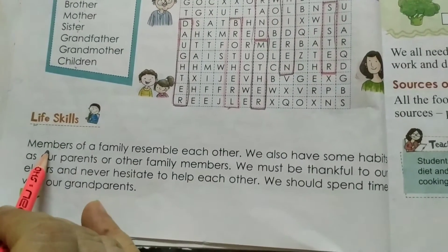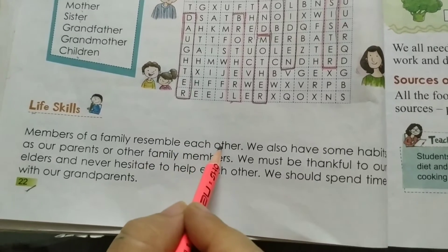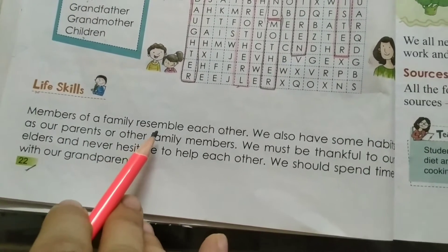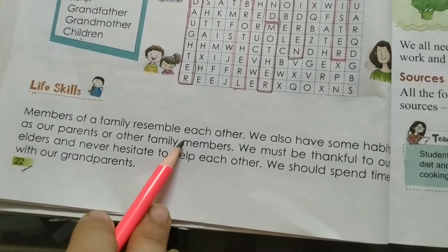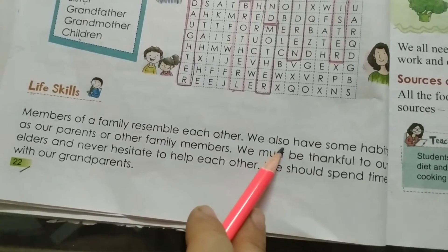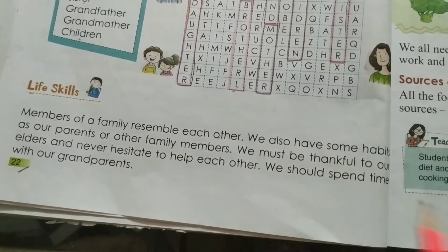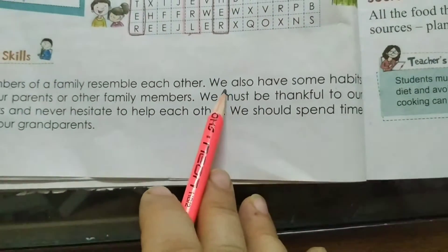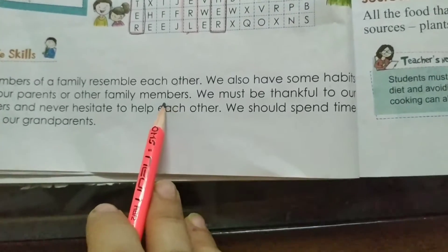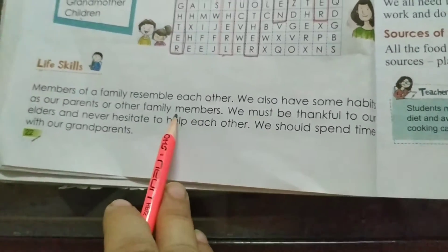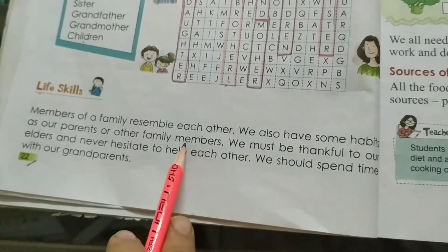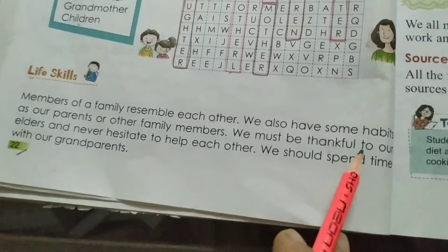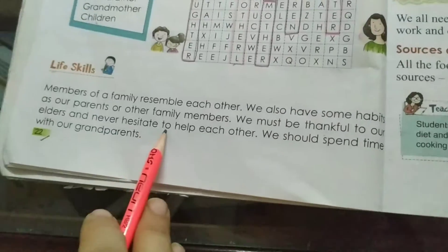Life skills — members of a family resemble each other. Members of family — आप family में जितने भी members होते हैं, वो सब एक दूसरे से जुड़े होते हैं। We also have some habits as our parents or other family members. हमारे जो माता पिता हैं या परिवार के अन्य सदस्यों के रूप में हमारी कुछ आदतें हैं — हमारे parents से हमारी कुछ habits उनसे मिलती हैं।